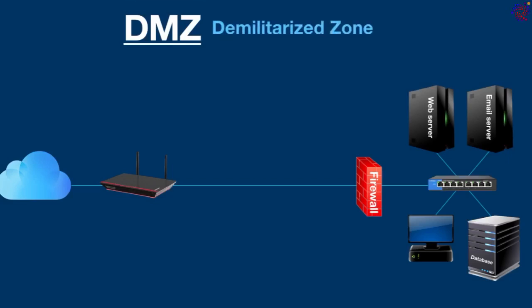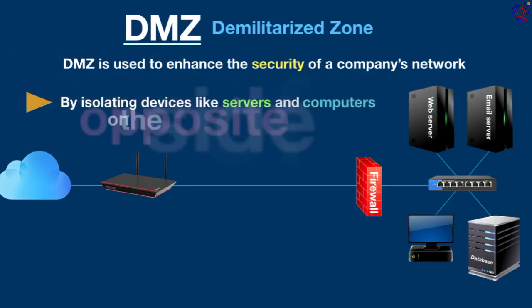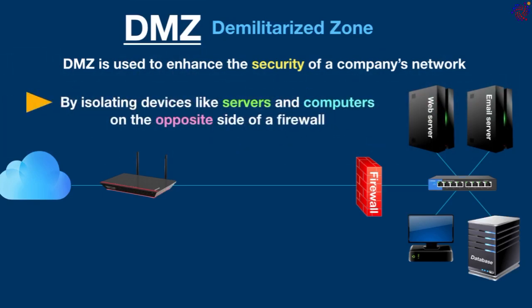DMZ stands for Demilitarized Zone. At the most basic level, a DMZ is used to enhance the security of a company's network by isolating devices like servers and computers on the opposite side of a firewall. So it's like creating two different networks. But the real question is why do you need to do this and how does a DMZ achieve this?